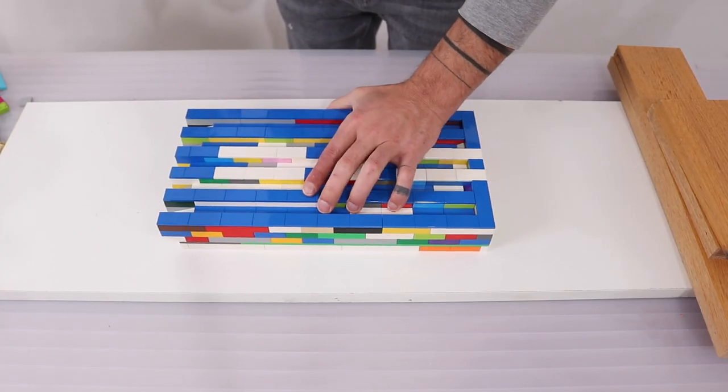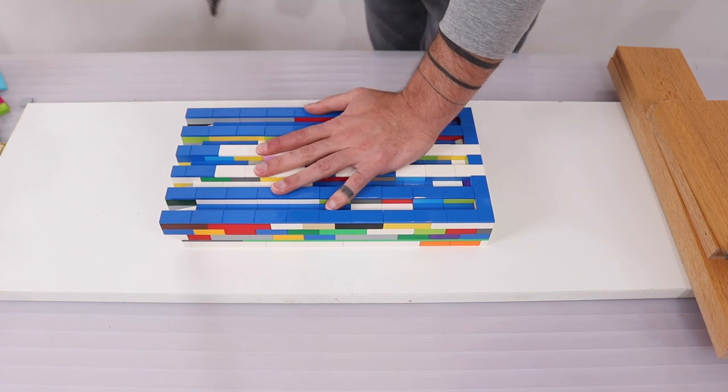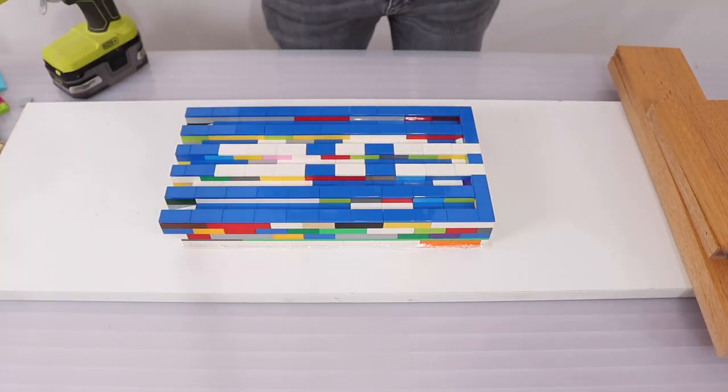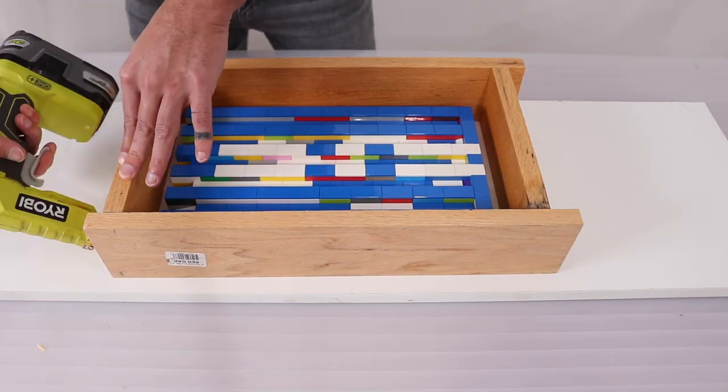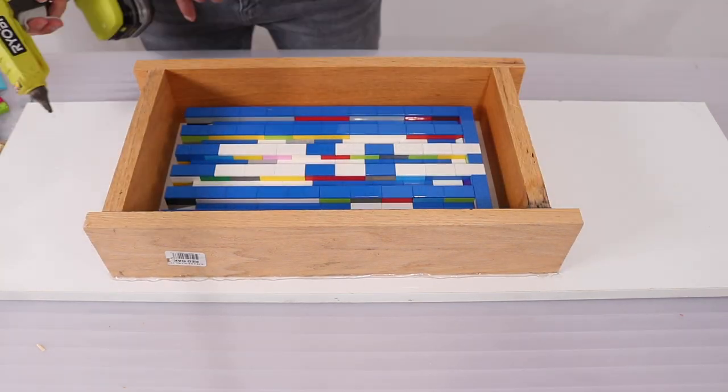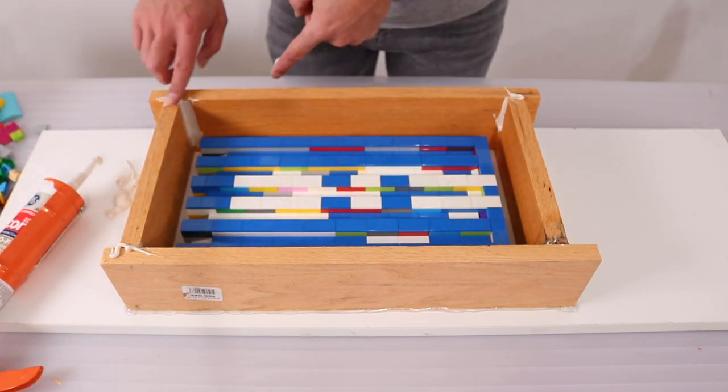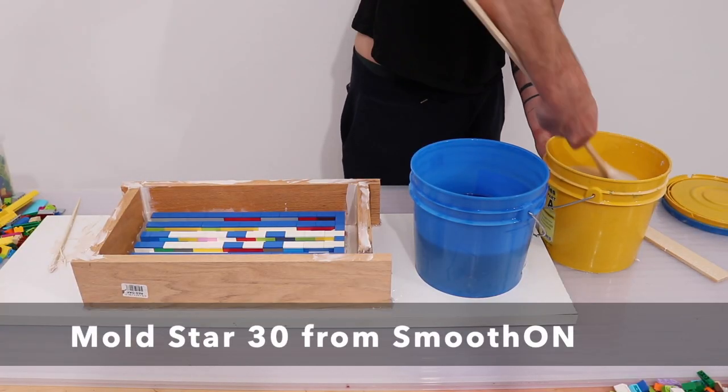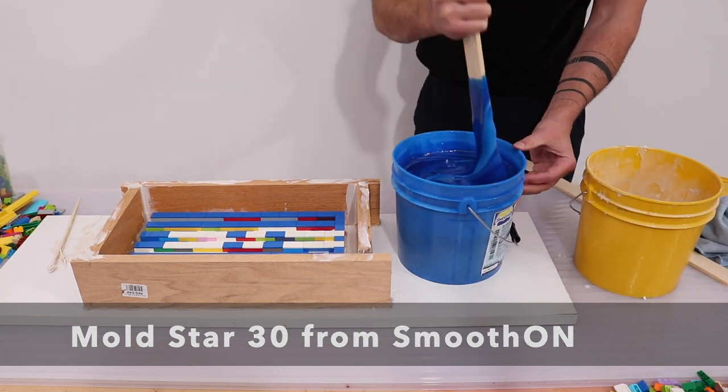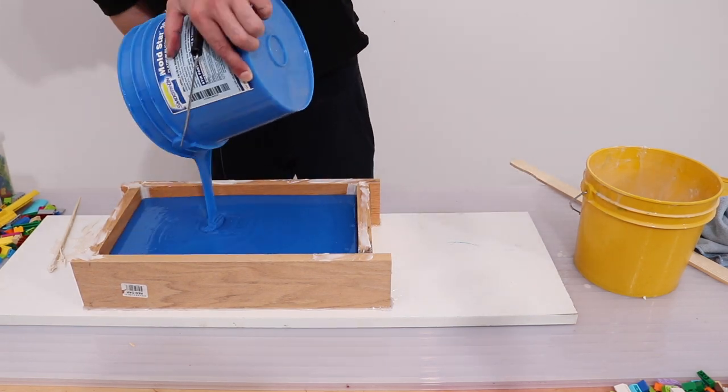I used my hot glue gun to secure the Legos down to a piece of melamine. Don't worry, the hot glue will peel off the Legos later. I then hot glued some scrap pieces of wood around the Lego contraption and made sure to really seal all the seams, corners, and edges. I used some GE silicone sealant to seal the mold from the inside. I let the GE silicone sealant sit for 24 hours to fully cure before mixing the two-part silicone mold making material and pouring it into the mold.